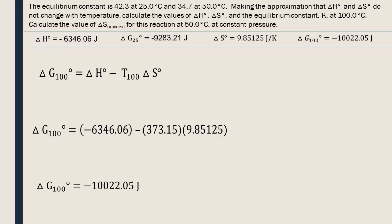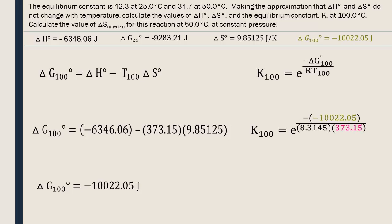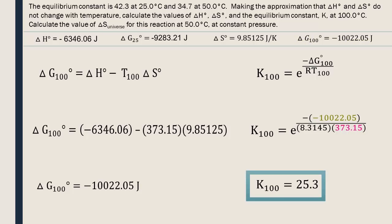Now that we know the standard delta G at 100 degrees Celsius, we can calculate the equilibrium constant at this temperature. We insert the standard delta G value that we just calculated with its corresponding temperature — 100 degrees Celsius, turned into kelvins. The equilibrium constant is 25.3. It does not have any units because they all get cancelled out.